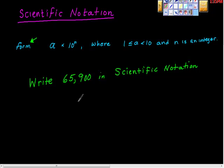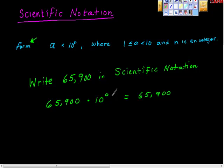Let's take a look at this. We're going to take 65,900 times 10 to some power, and it has to equal 65,900. If we had 10 to the zero power — well, that's worth 1 — and 65,900 times 1 would equal that, wouldn't it? But we're trying to stay inside the rule, and 65,900 is not less than 10. So what I'm going to do is move the decimal point — we know it's here — one place to the left, and increase the value of n by 1.